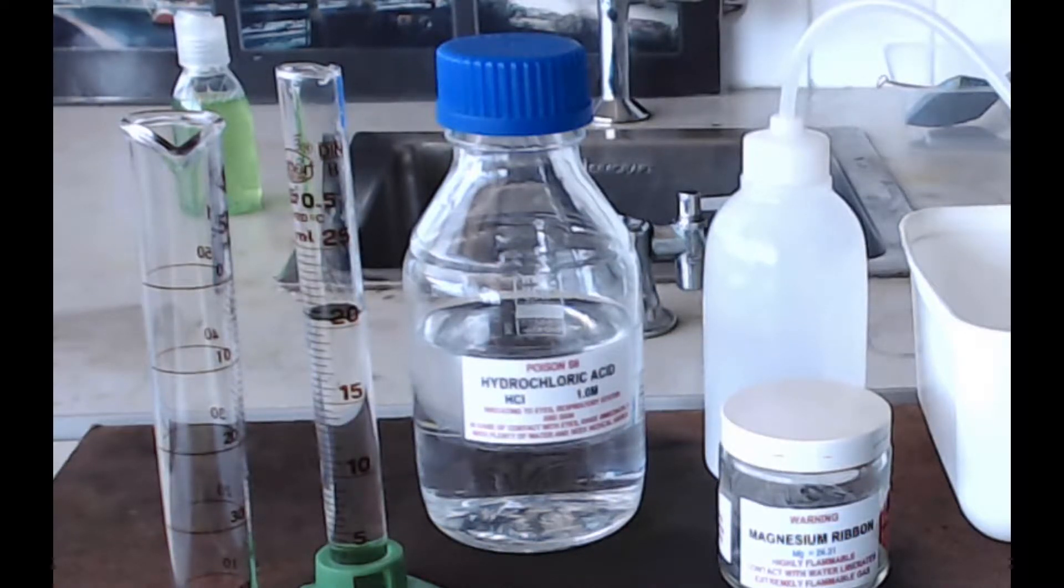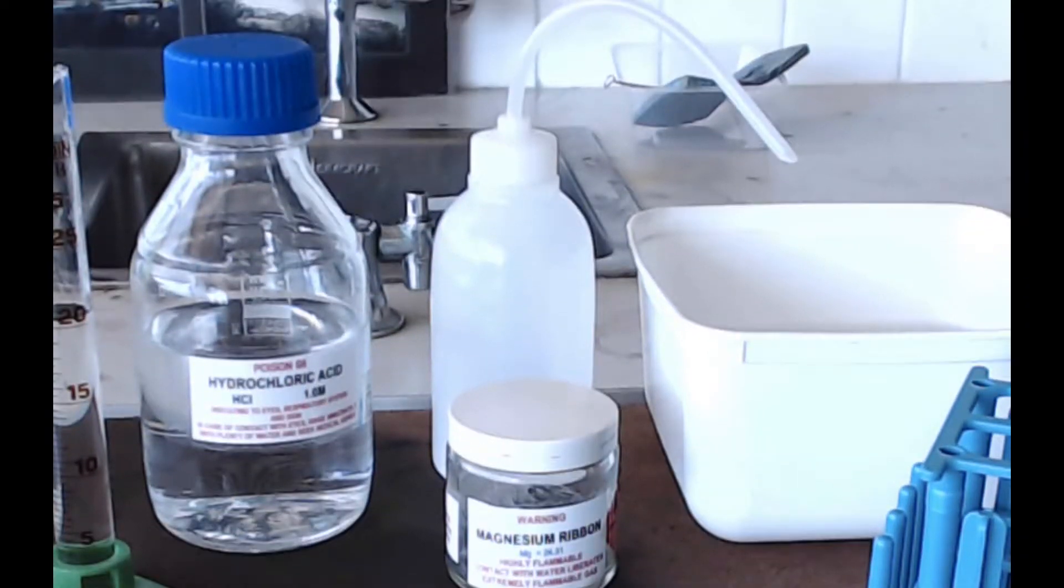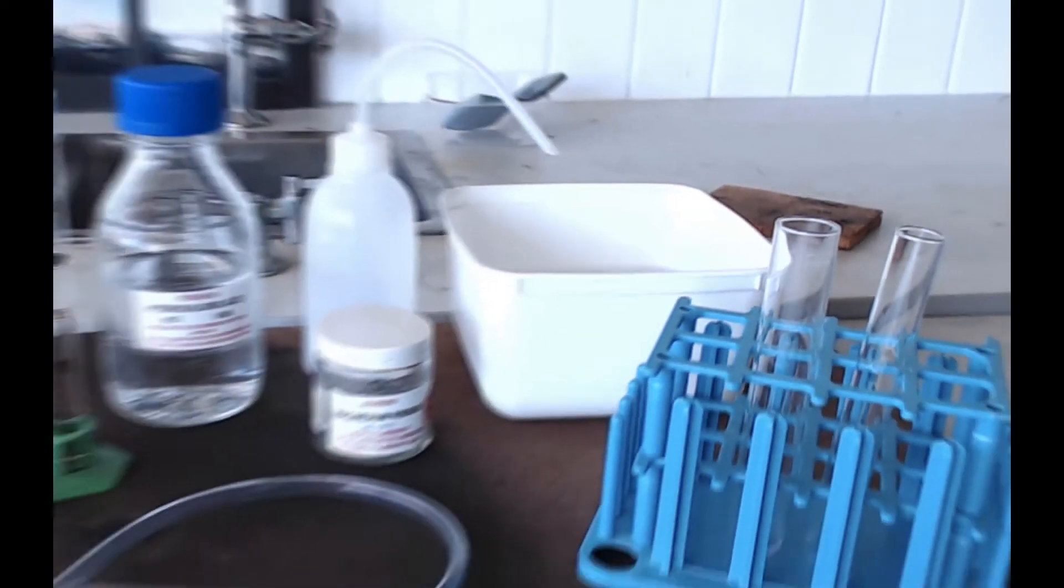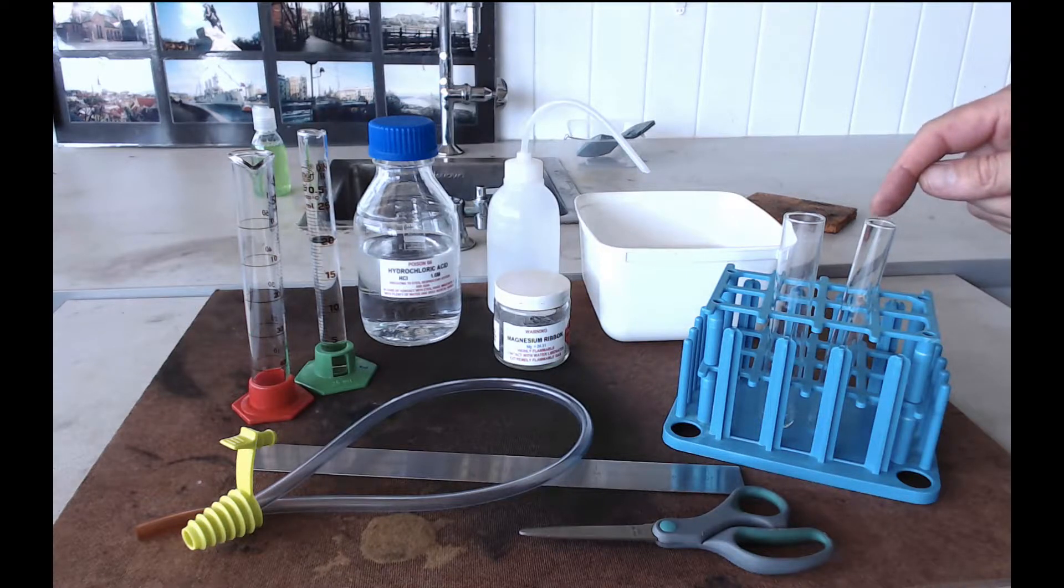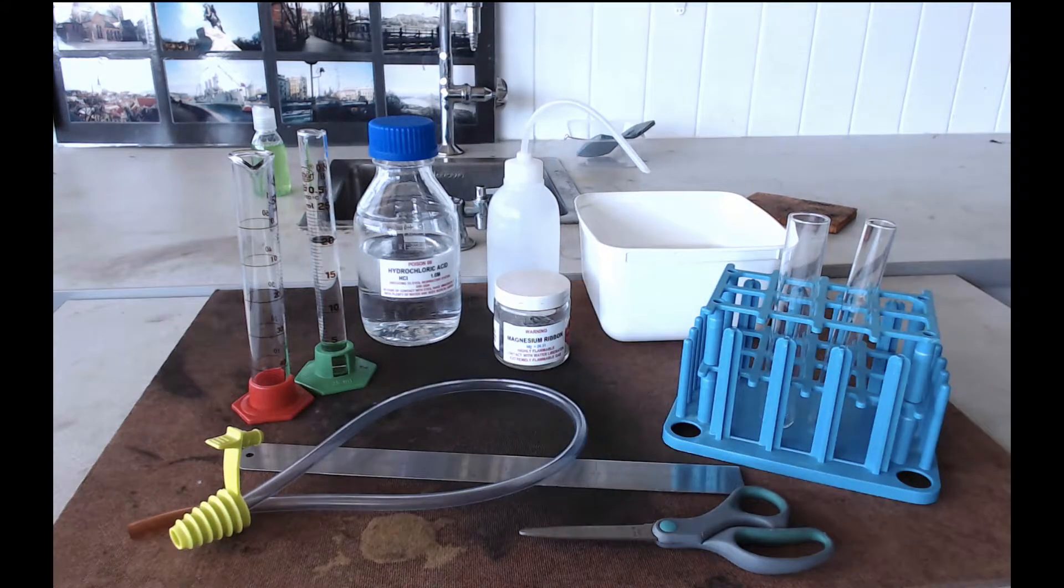You're going to need 4cm pieces of magnesium ribbon. These might have been cut for you or if not you're going to need a ruler and a pair of scissors and you can cut it yourself. You're going to need some distilled water. You're going to need an ice cream tub full of tap water, well not full of tap water but about half full. You're going to need a boiling tube, that's one of these larger tubes here, and a small test tube, that's one of these narrower ones here. And finally a delivery tube, that's this thing, and that's going to be for getting the gas from one of these tubes to the other.